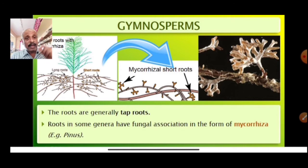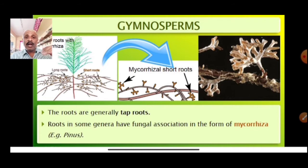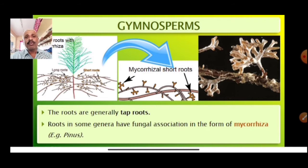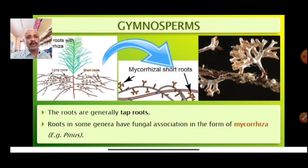The roots in gymnosperms are generally tap roots. In angiosperms we get fibrous roots, which are considered more advanced along the path of evolution. Some genera have fungal association in the form of mycorrhiza — that means the roots of higher plants are associated with fungus, and these are called mycorrhizal roots.